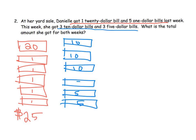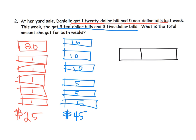How much money did she get that second week? Let's count: ten, twenty, thirty — two fives makes forty, plus the extra five is forty-five dollars. So if we wanted to record that in a tape diagram, it might look like twenty-five and forty-five with a question mark.